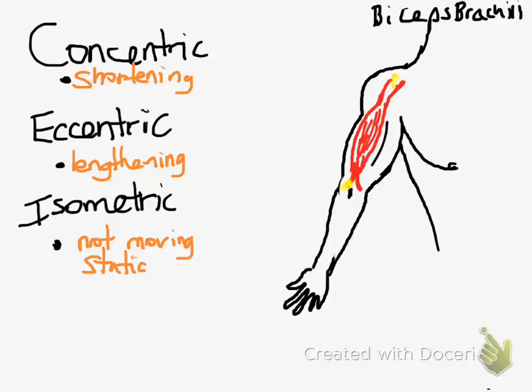In this video I'm going to talk a little bit about concentric, eccentric, and isometric contractions. And the example that we're going to use is the biceps brachii, or just straight biceps.